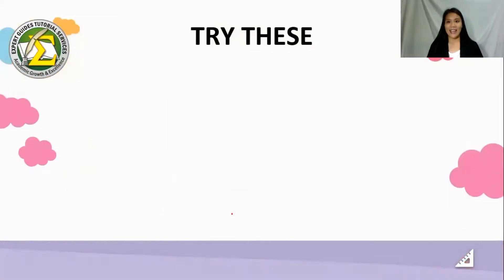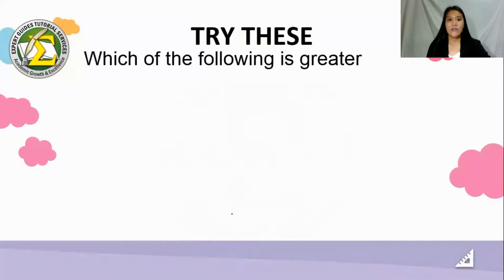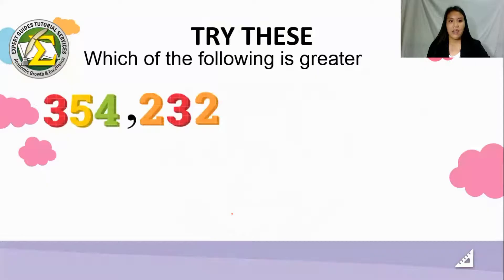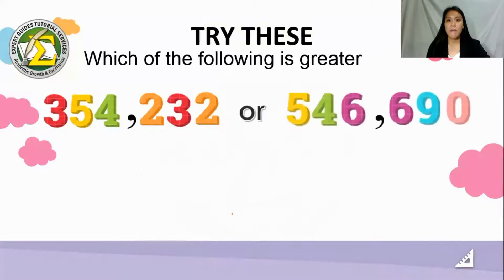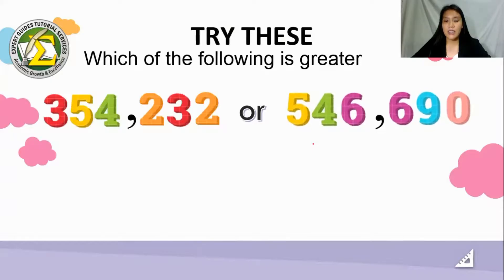Now let's try this. You can pause this video and try to answer the following to see how well you understand the topic. Which of the following is greater: 354,232 or 546,690? Both are in the hundred-thousands place value, but they have different digits in the highest position. Comparing three and five, our hungry alligator wants to eat the greater number — he will eat five. That gives us 546,690 as the greater number.